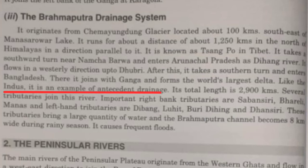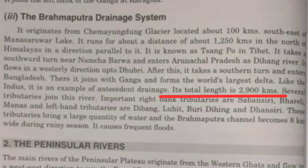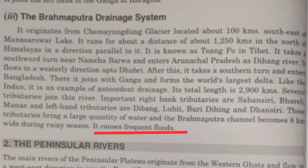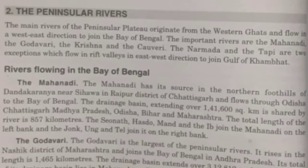River Brahmaputra is an example of antecedent drainage, meaning it is an ancient river that existed before the upliftment of the mountains. This means Brahmaputra was already present before the formation of the Himalayas. It has a total length of 2,900 kilometers and has many tributaries on both its right and left banks, including River Tista, Dihang, Dhansiri, Subansiri, and others. During the rainy season the volume of water is very high, causing frequent floods. This concludes the Himalayan river system.